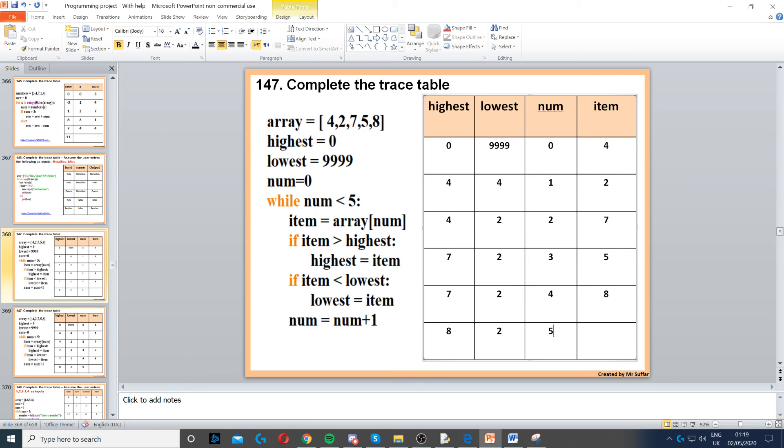Then num increments to 5. Then while num, while 5 is less than 5, that's false, so our loop is finished now and we finish the trace table.